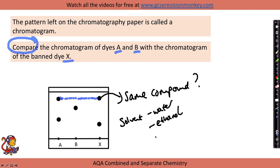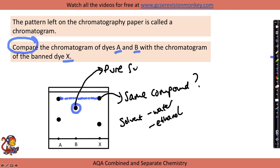In different solvents, different compounds will spend different amounts of time in the mobile and stationary phases, and they can have different RF values. The position of this colour on dye A does not match that of dye X. For dye B, it only has one colour and it doesn't match dye X at all. Because dye B has one colour only, this tells us that dye B is a pure substance — it only contains one compound.